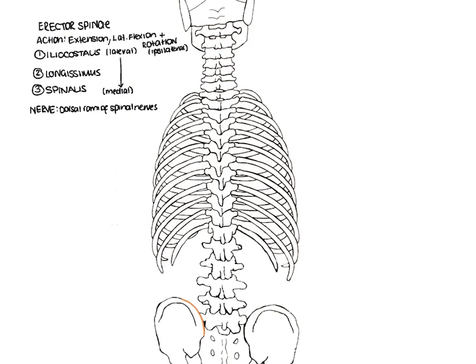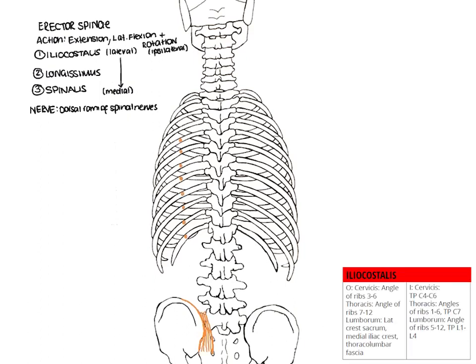Let's start by drawing the iliocostalis. As its name suggests, this muscle spans from the iliac crest up to the angles of the ribs. The iliocostalis lumborum spans from the lateral crest of the sacrum, the medial iliac crest, and the thoracolumbar fascia, to insert on the angles of ribs 5 to 12 and the transverse processes of L1 to L4. In the thoracic region, the muscle spans from the angles of ribs 7 to 12, to insert on the angles of ribs 1 to 6 and the transverse process of C7.